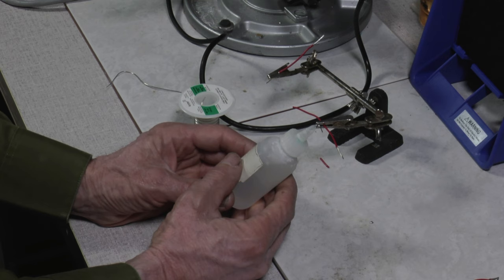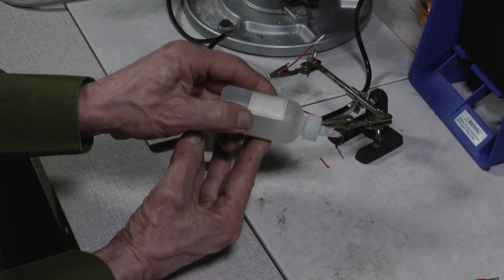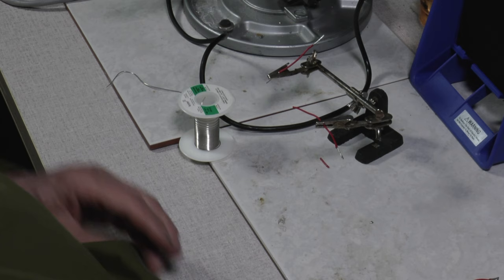If you use medium or high flux, you will have to use denatured alcohol to clean it up after you're done soldering. We're going to apply flux to the wire here.